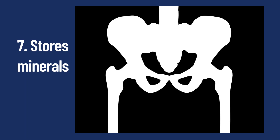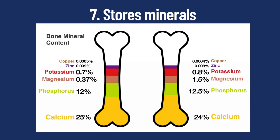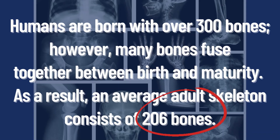I'm going to show you the differences between bone minerals in males and bone minerals in females. Take a look at this illustration — these are the bone mineral contents. Humans are born with over 300 bones; however, many bones fuse together between birth and maturity. As a result, an average adult skeleton consists of 206 bones.